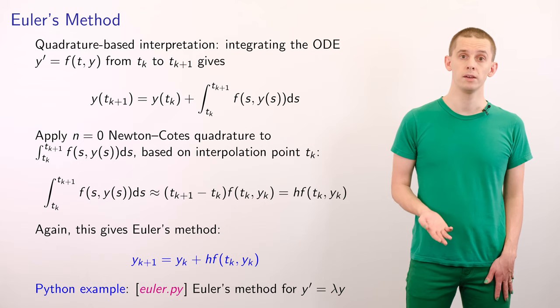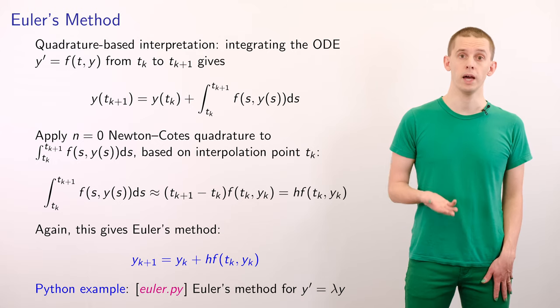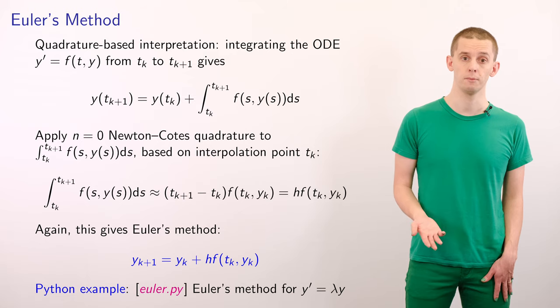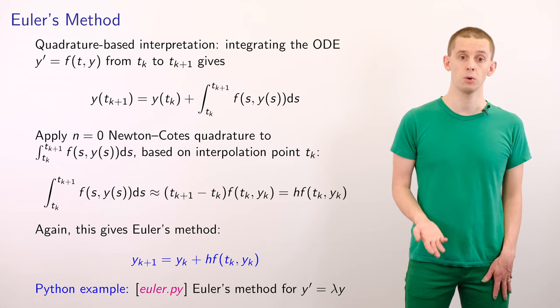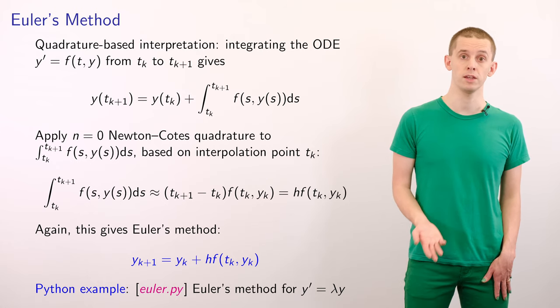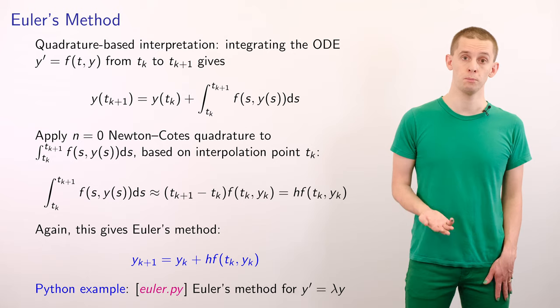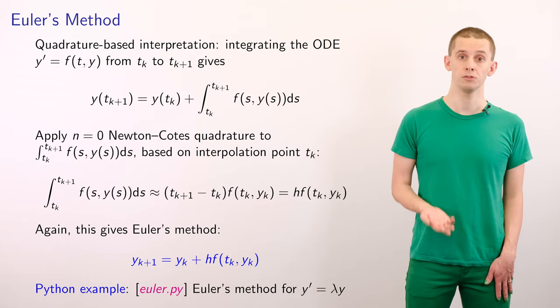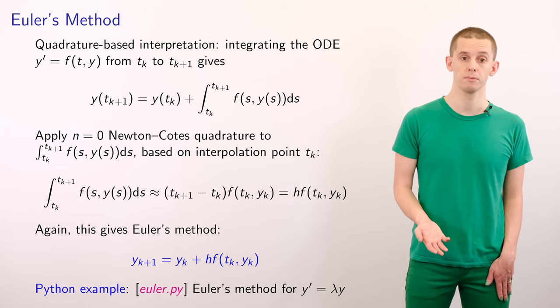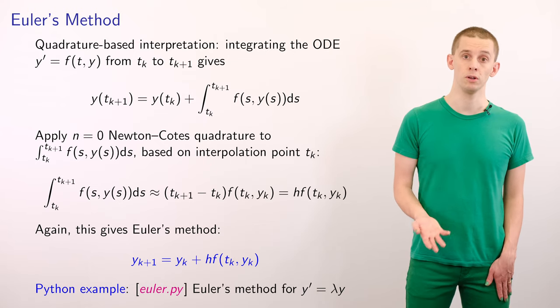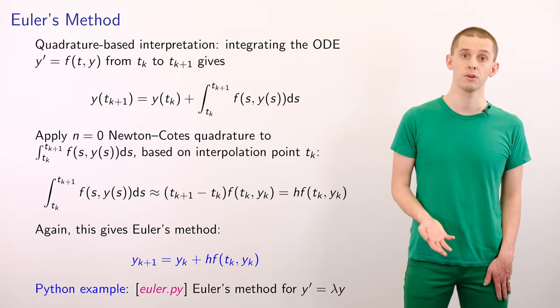Let's apply n equals zero Newton-Cotes quadrature to approximate this integral, and we'll use a single quadrature point located at tk. Therefore, this integral can be approximated as h times f of tk and yk. And again, we arrive at Euler's method. We have that yk plus 1 is equal to yk plus h times f of tk and yk.